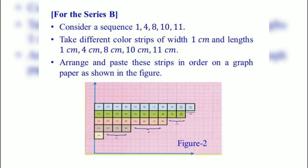For series B, consider a sequence 1, 4, 8, 10, 11. Take different color strips of width 1 cm and lengths 1 cm, 4 cm, 8 cm, 10 cm, 11 cm. Arrange and paste these strips in order on a graph paper as shown in the figure.